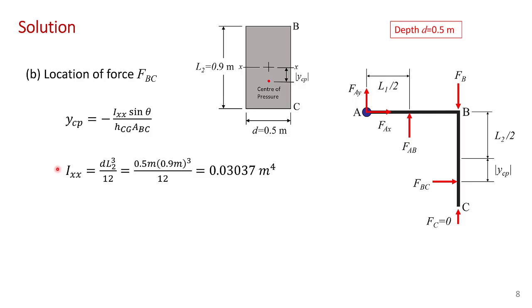For a rectangular gate, the second moment of area around the centroid is just the width times the height cubed divided by 12. So making the substitutions, this gate has a width into the page of half a meter, its height is 0.9 meters cubed divided by 12, and we get a second moment of area of 0.03037 meters to the fourth.